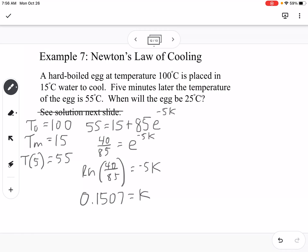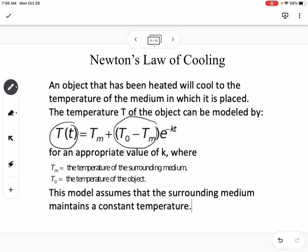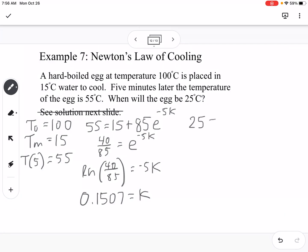Now that we know K, we can use the equation again to find when our final value is equal to 25. We're going to say 25 equals 15 plus 85E to the negative 0.1507T. We're solving for T. So first step again, we're going to subtract the 15, which gives us 10, and divide by 85. This would be 10 over 85 equals E to the negative 0.1507T.